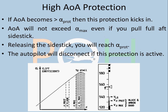For high angle of attack protection: if the angle of attack becomes greater than alpha prot (alpha protection), this protection kicks in. The angle of attack will not exceed alpha max even if you pull full aft stick. Looking at the graph of lift versus angle of attack, you can see alpha prot, alpha floor, alpha max, and alpha CL max. At alpha prot, which is a certain angle of attack based on speed and configuration (V alpha prot), if exceeded, the protection kicks in and even at full aft stick the aircraft will not exceed alpha max. If you release the side stick, you return to alpha prot.